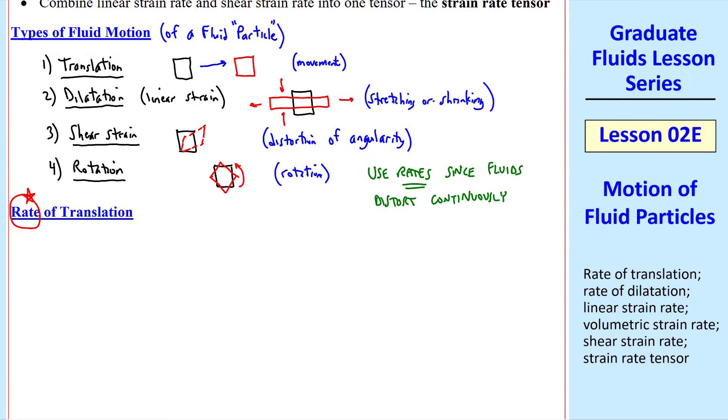In fluid mechanics, we prefer rates. We use rates since fluids distort continuously. In solid mechanics, we could describe the same motions, but not as rates, just as motions themselves.